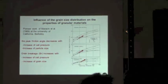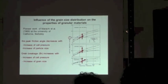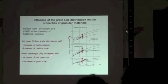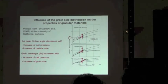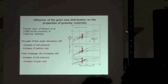At the same time, they show that grain breakage — given here by an index — increases with the cell pressure, which is also quite obvious, but also increases with the increase of grain size. These two aspects are linked.